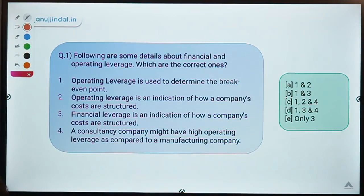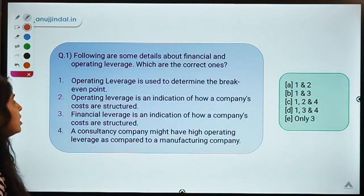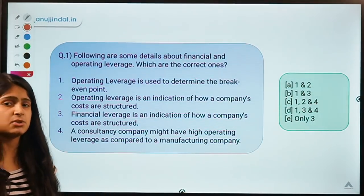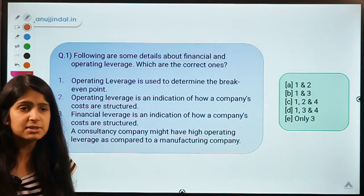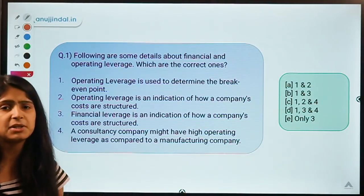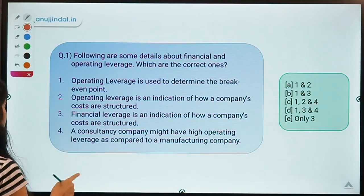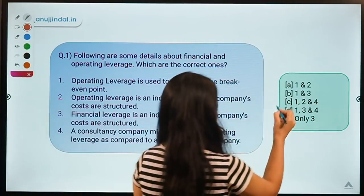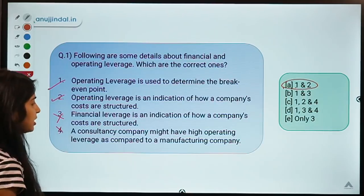Here is question number one. This question talks about financial and operating leverage — you are given four statements and have to select the correct ones. You can pause the video to read the statements carefully. This topic was suggested by one of you in the comments. The solution for this question is option A — statements 1 and 2 are correct; statements 3 and 4 are not correct.